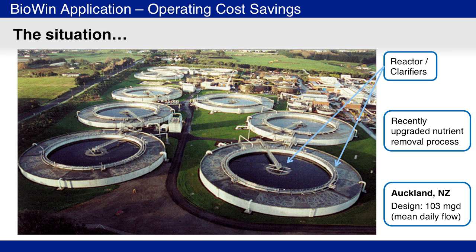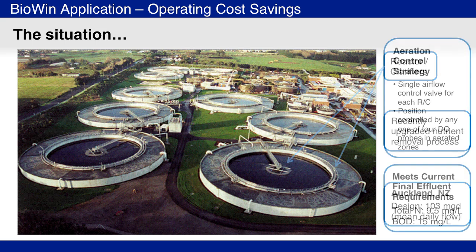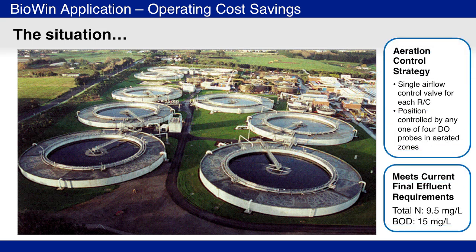This system consists of several reactor clarifier package plants. The influent was typical for New Zealand wastewater, and the design average daily flow rate was 103 million gallons per day. The plant was meeting its effluent requirements, which included BOD and total nitrogen limits. One aspect of the plant design was that the total air flow to each reactor clarifier was controlled by one valve.